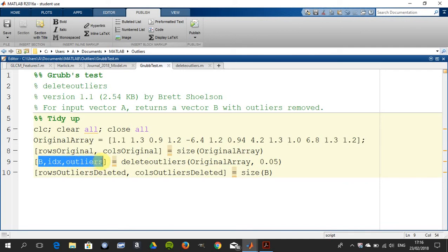It will return the matrix B, which is the original array minus the outliers, the index that will tell me the position of the outliers, and this here will tell me the actual outliers themselves. So IDX is what position they occurred, and outliers are the actual values, and then the matrix B will be the original array minus the outlier.